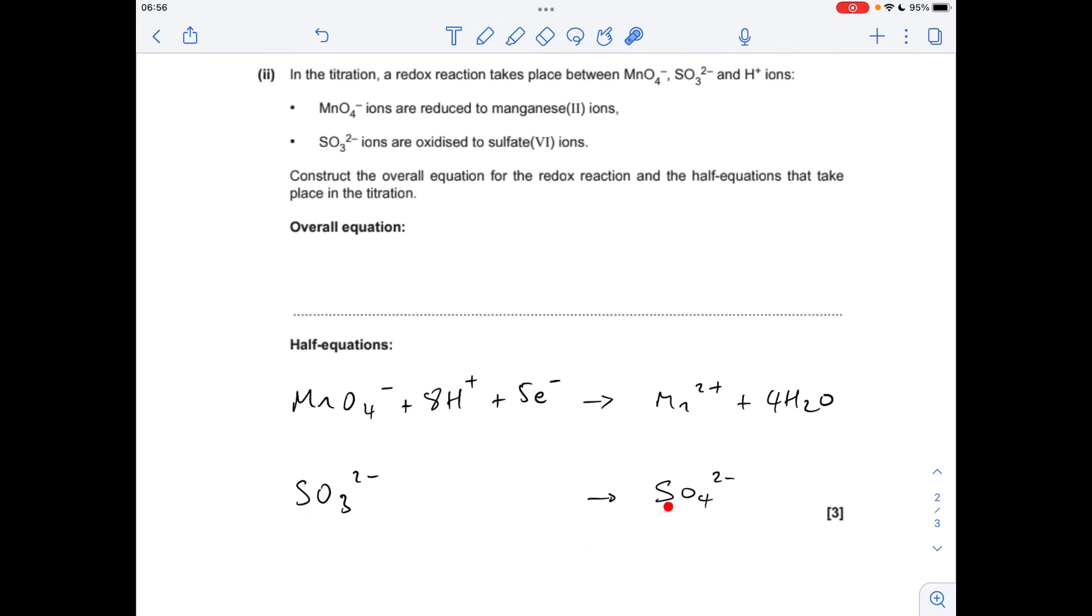Next one. So sulfurs are fine. We've got an imbalance of oxygen. We've got three O's here but we've only got one there, so we need an H2O on this side. That's introduced two hydrogens, so we need two H+ on this side. And if we just deal with the charge, we've got an overall charge of 2 minus on the left. We've actually got no charge on the right, so we need two electrons on the right to bring that overall charge up to 2 minus to match the left hand side.